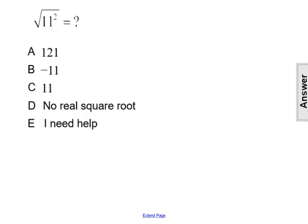What is the square root of 11 squared? So when we see the square root all by itself, there's no symbol out front, that means we're talking about the positive or the principal square root. Our answer is going to be a positive number.